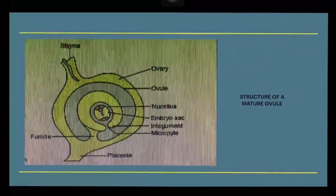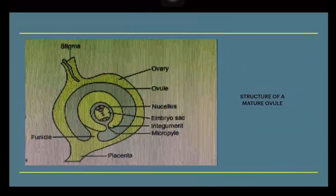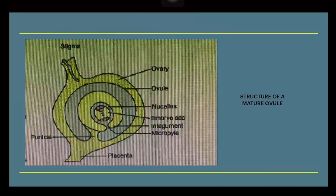This is the structure of a mature ovule. It consists of stigma, ovary, ovule, nucellus, embryo sac, integument, micropyle, placenta, and funicle.